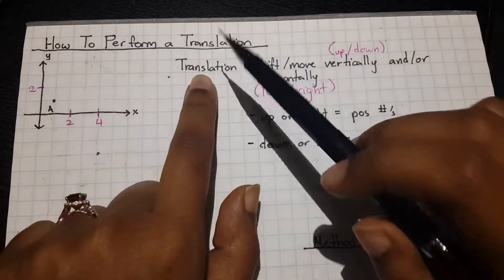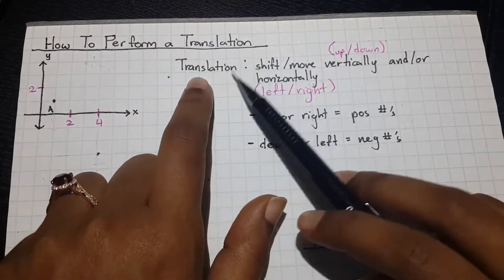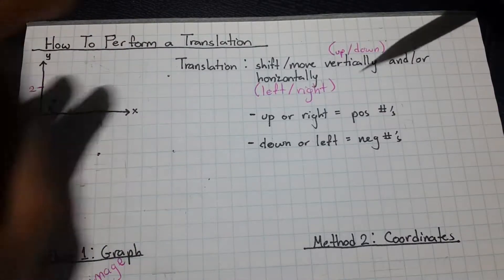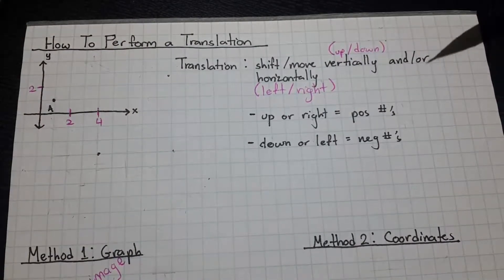So, to just quickly go over a definition, a translation is when you shift or move a point or a set of points vertically and or horizontally.